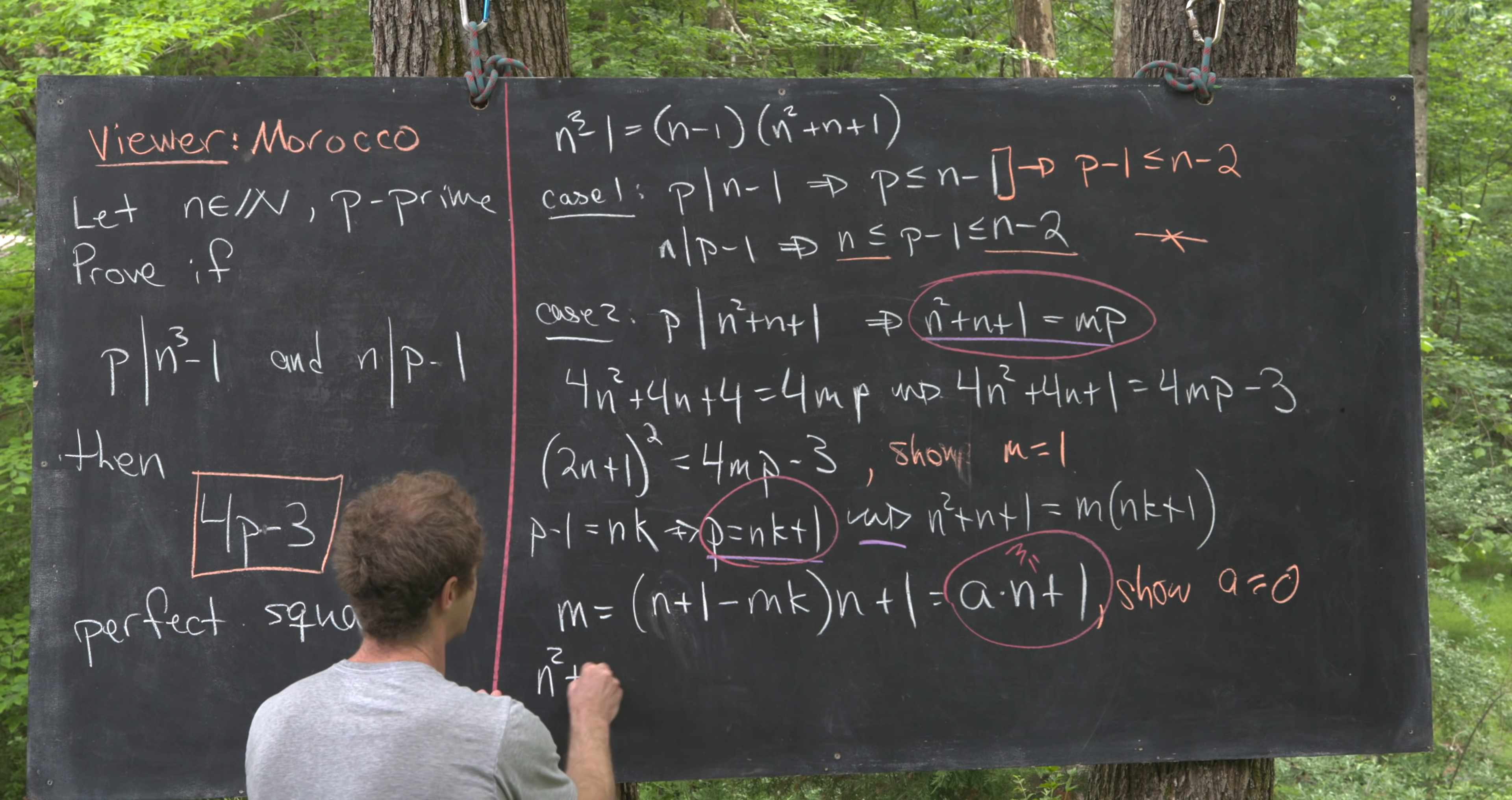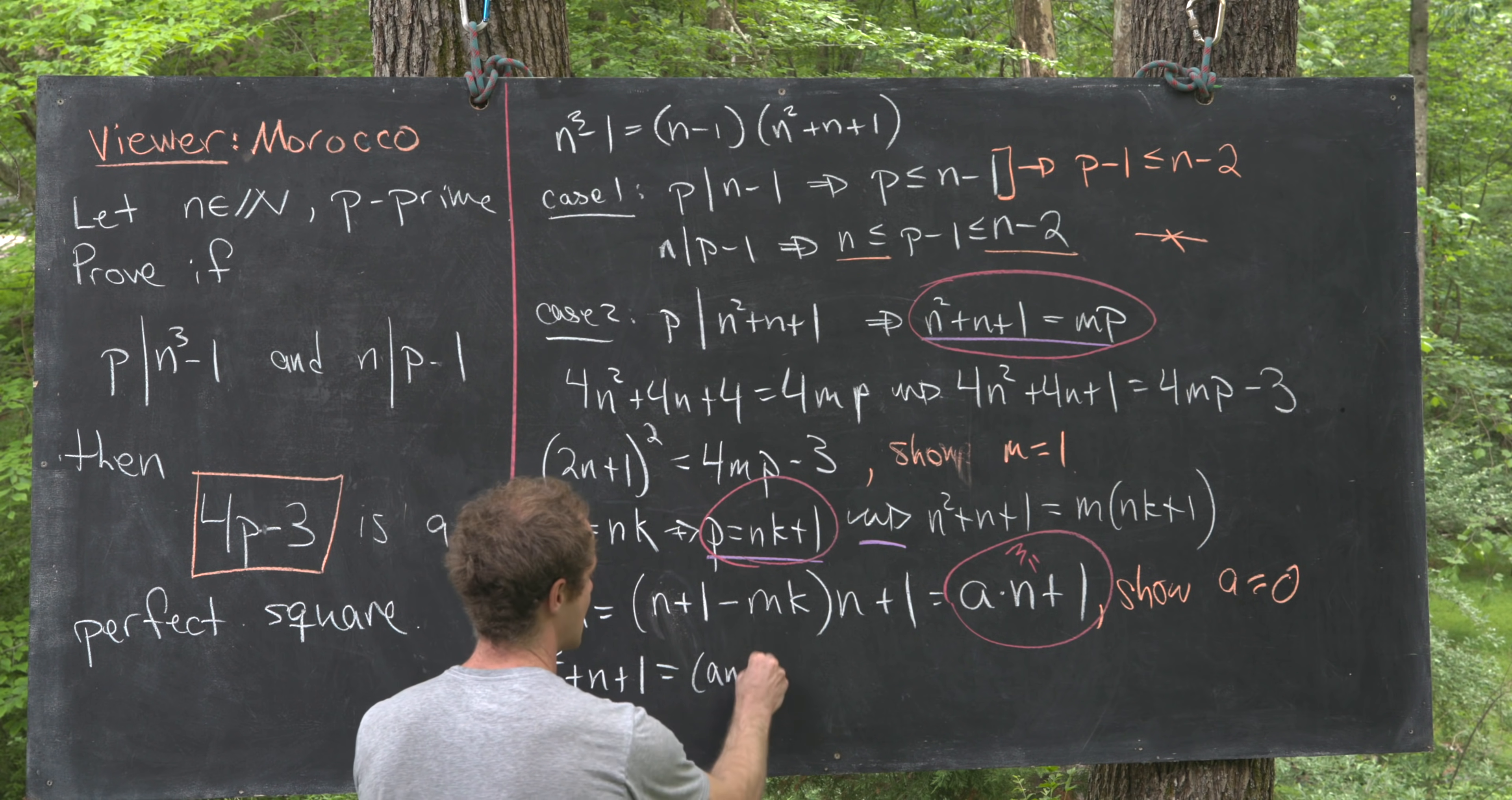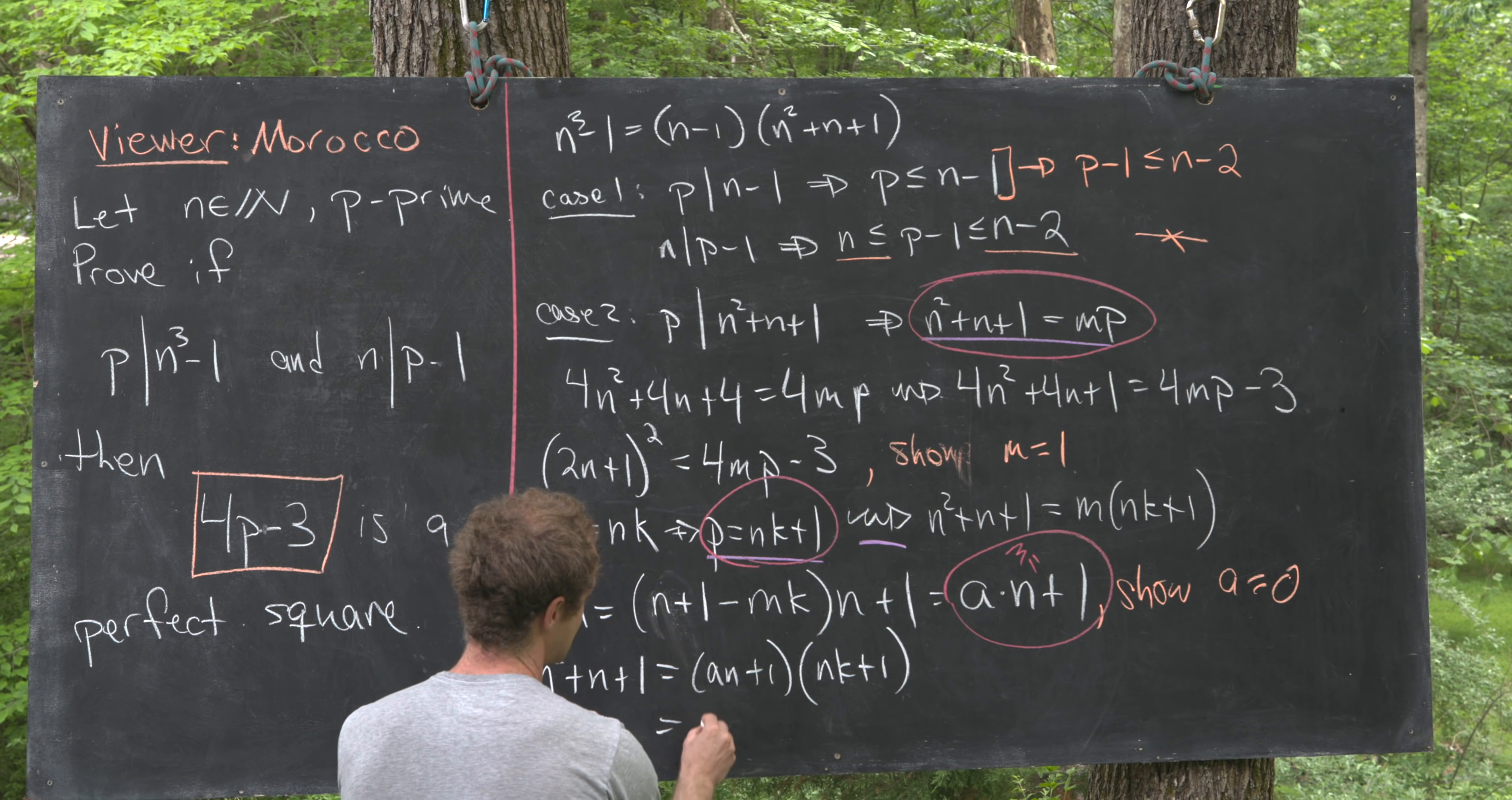That means we've got n²+n+1, that's going to be equal to m times p, so here we have (an+1) times (nk+1).